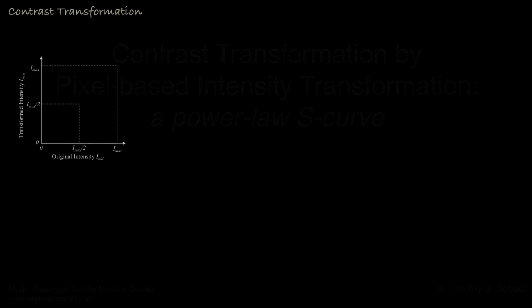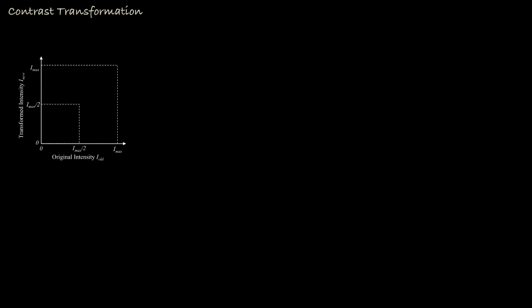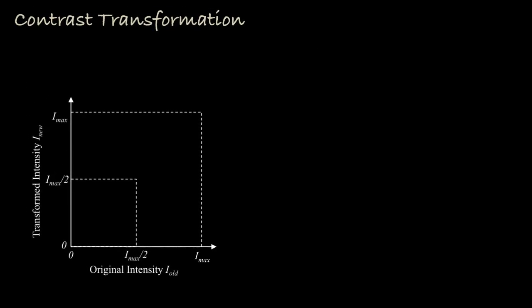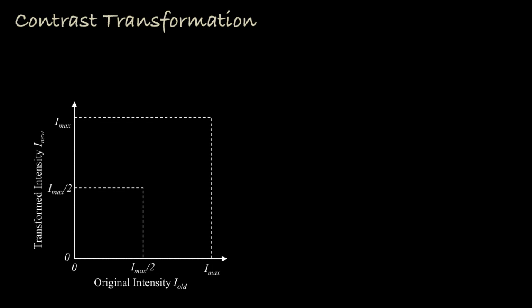Let's begin by thinking about the ways that we can transform the intensity at each pixel in an image. The original intensity for an image takes values between zero and some maximum intensity. If, for example, the intensity for each pixel of the image is represented with 8 bits, then the maximum intensity would be equal to 255.